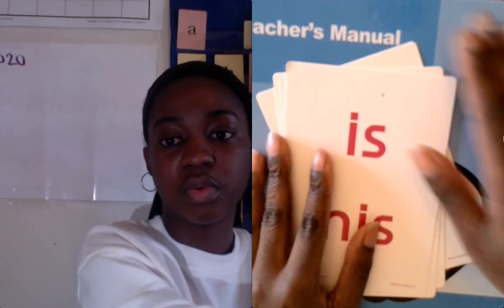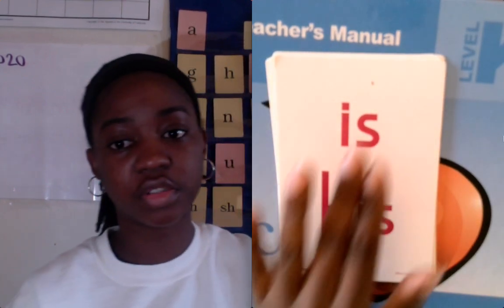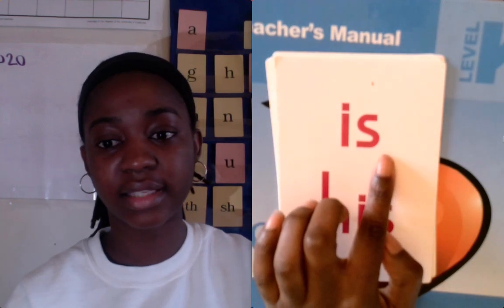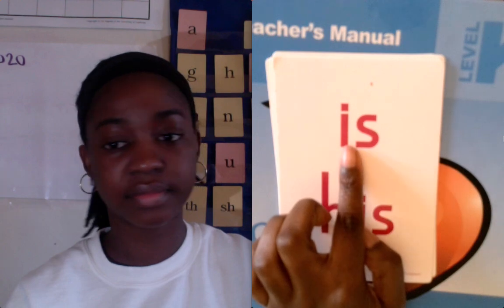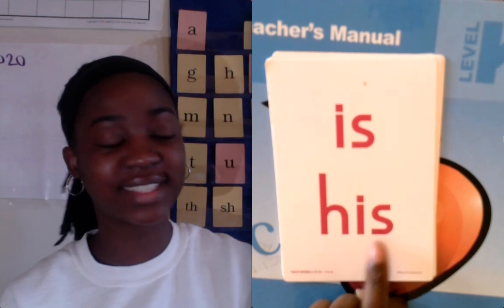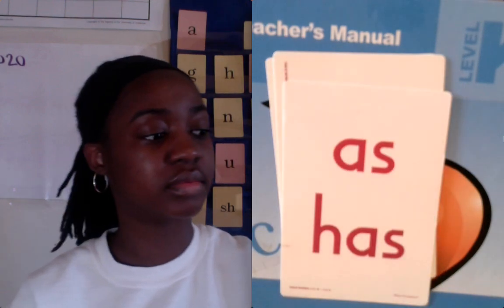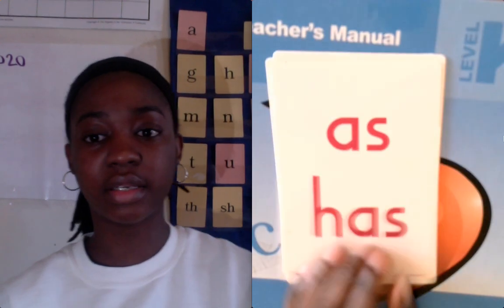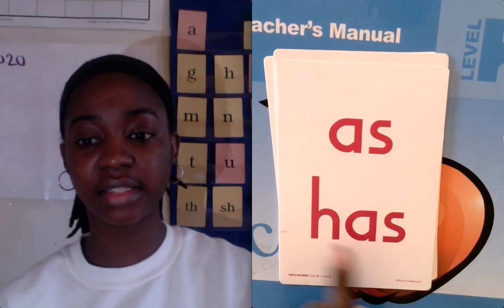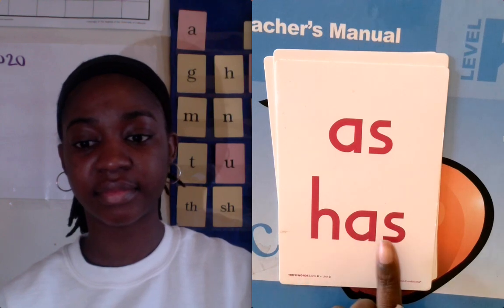We're going to do the word at the top first, and then the word at the bottom after. So we're going to first go I-S, is. Then we're going to come down, and we're going to do H-I-S, his. Beautiful. I'm going to start at the top again, and we're going to first do A-S, as, and then we're going to do H-A-S, has. Good job.